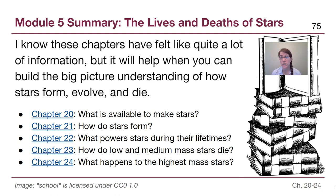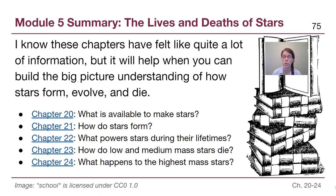Chapter 23 went into the details of how low mass stars die — their outer layers become a planetary nebula, and the core left behind is a white dwarf. Chapter 23 also covered medium mass stars: above a certain mass, stars won't be able to make a white dwarf. They will instead explode and leave behind a neutron star, or — as chapter 24 covered — the very highest mass stars can leave behind a black hole.